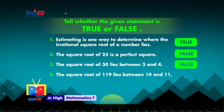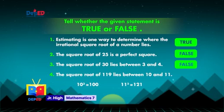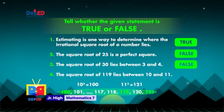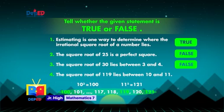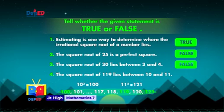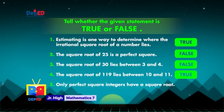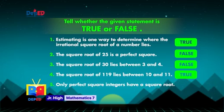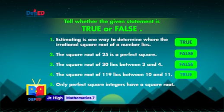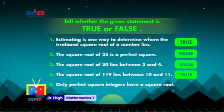Number 4: the square root of 119 lies between 10 and 11. Since 10 squared is 100 and 11 squared is 121, and 119 lies between 100 and 121, its square root would fall between 10 and 11. The statement is True! Number 5: only perfect square integers have a square root. If we try to get the square root of a number which is not a perfect square on a calculator, there will still be a result. So the last statement is False!